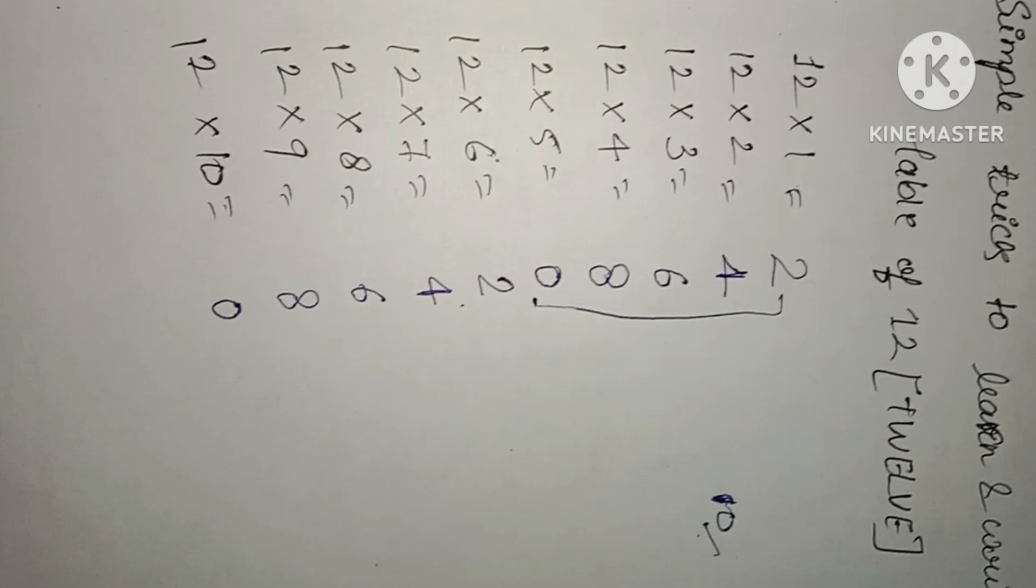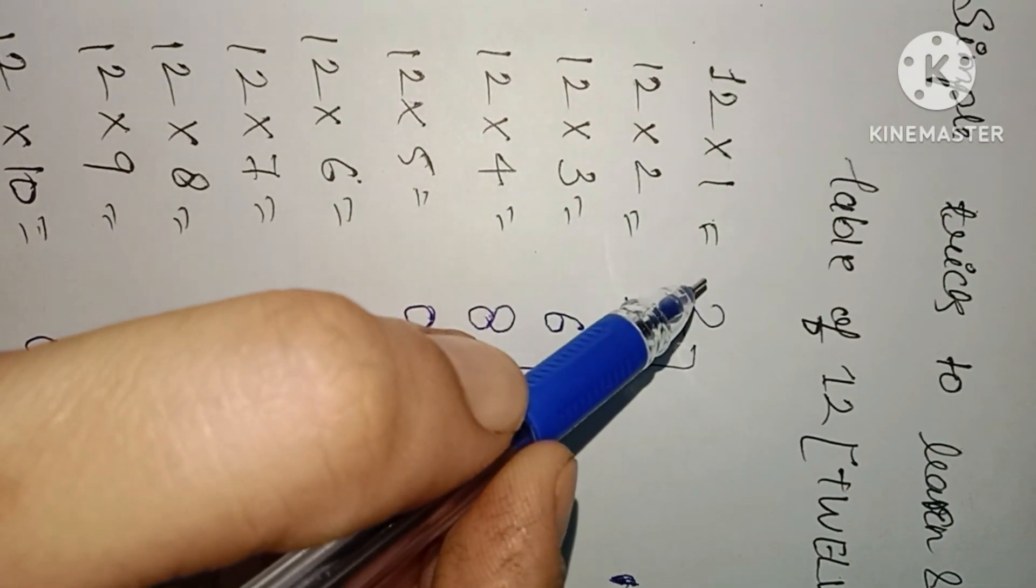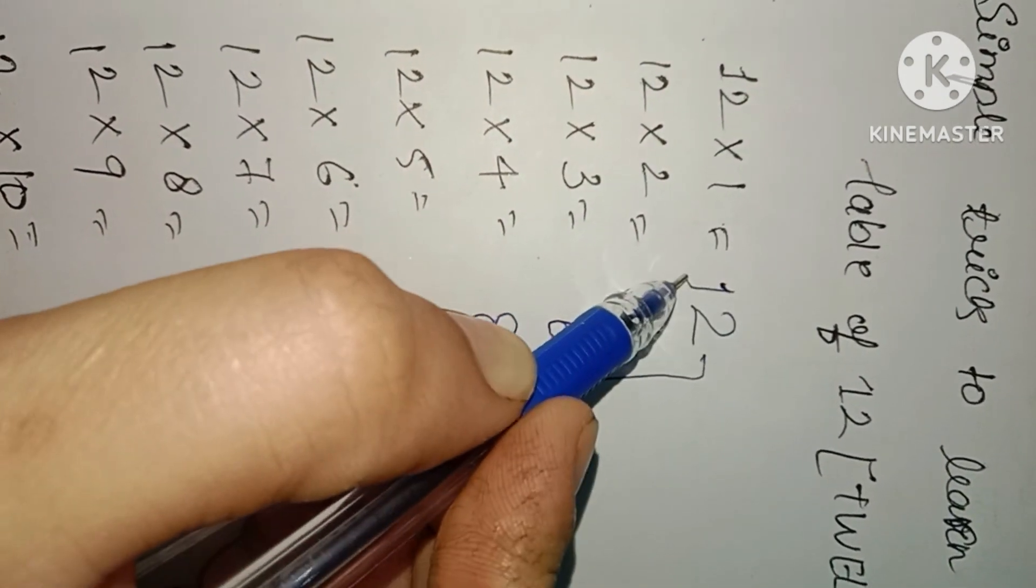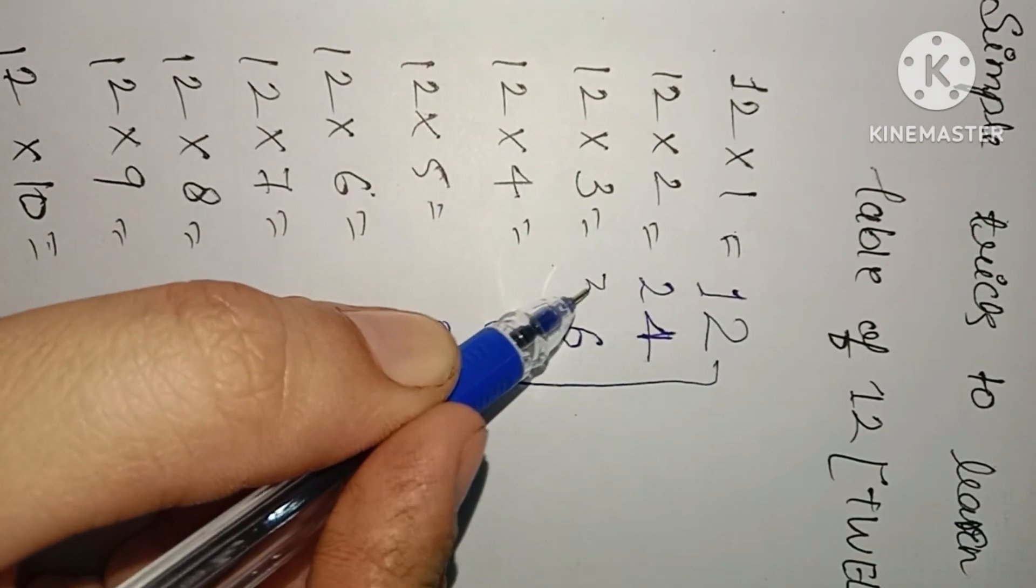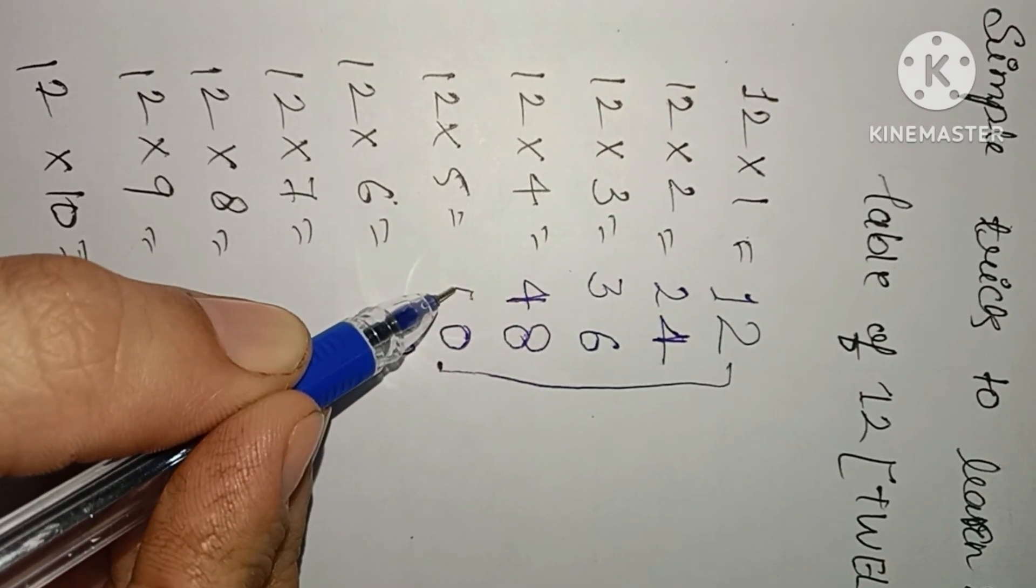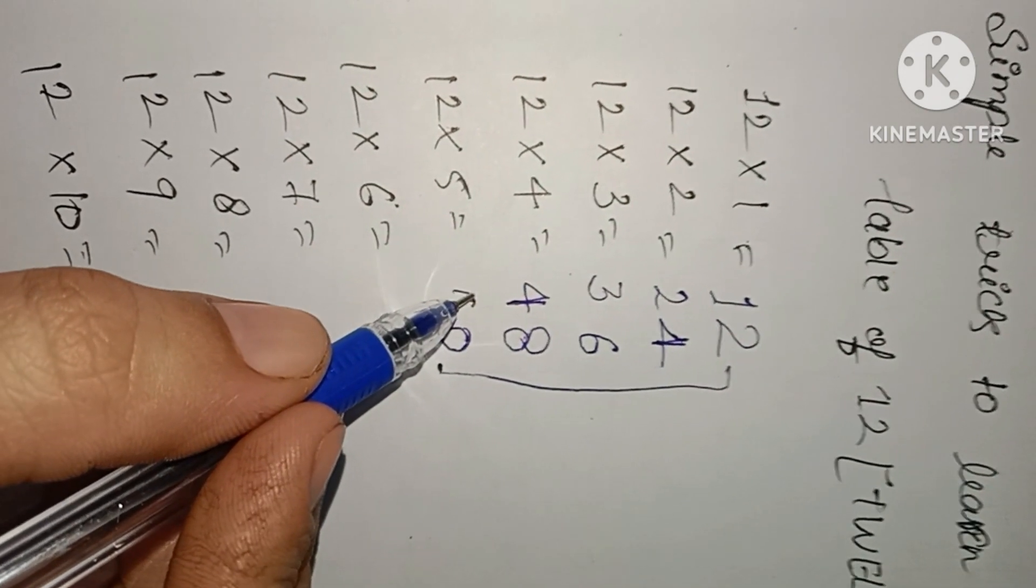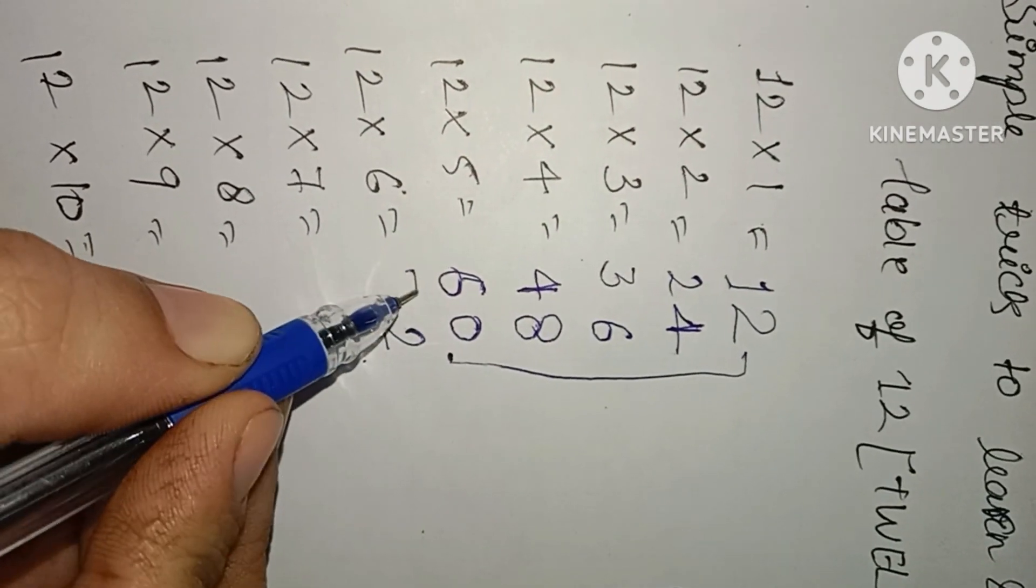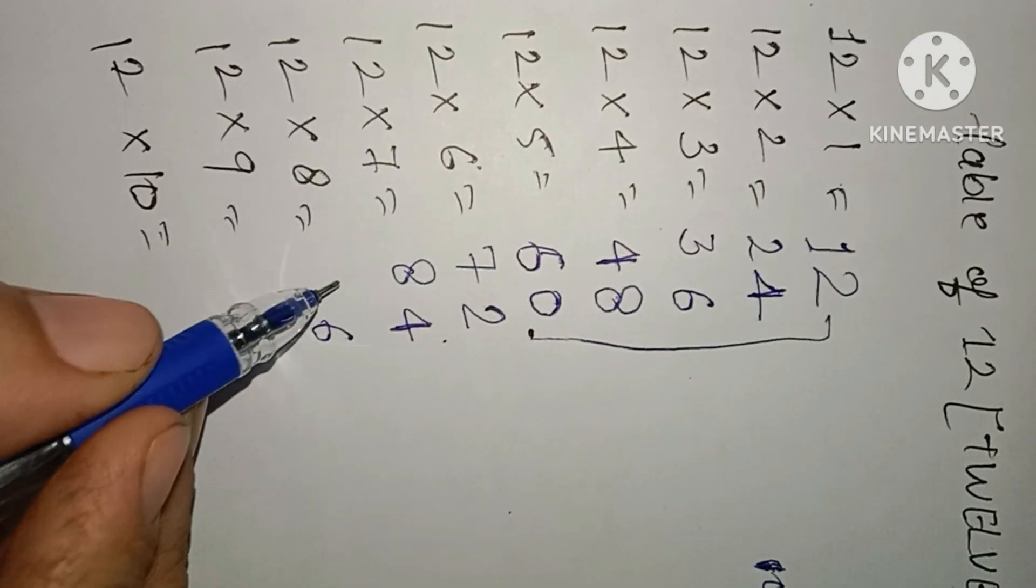Now everyone understands the first step. Now second, simply you will write 1, 2, 3, 4. Now we will not write 5, we will write 6. Only 5 we have to remove from here. First what we have removed from here? One. Now 5 we will remove.